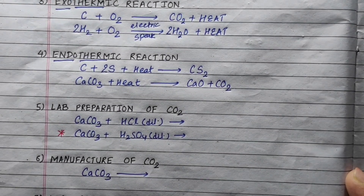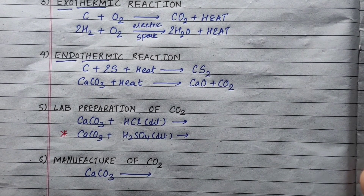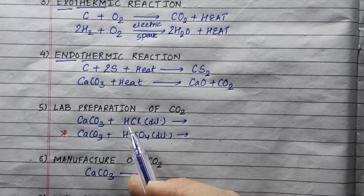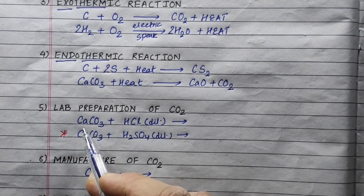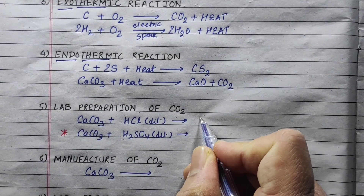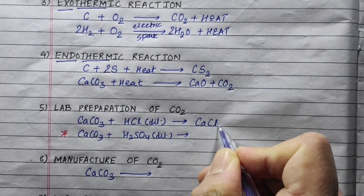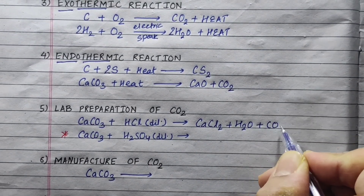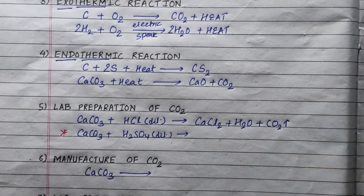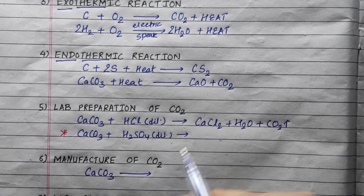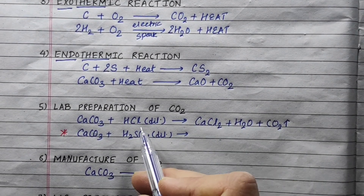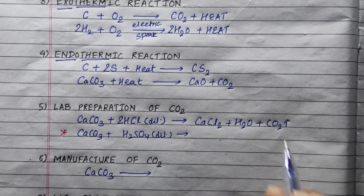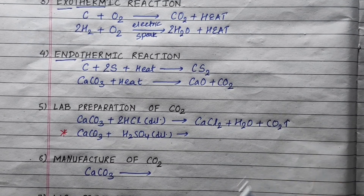This is the lab preparation of carbon dioxide. We use limestone — calcium carbonate — directly with hydrochloric acid. So, metal carbonate plus acid gives salt, calcium chloride, water, and carbon dioxide is released. Note: sulfuric acid should not be used in lab preparation because calcium sulfate is an insoluble salt, which precipitates and stops the reaction.